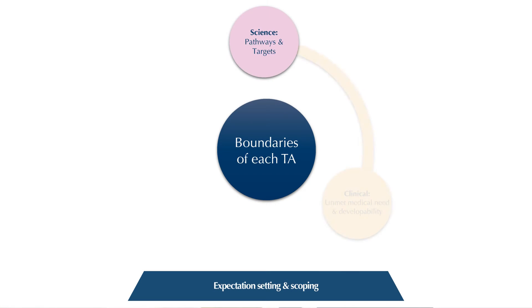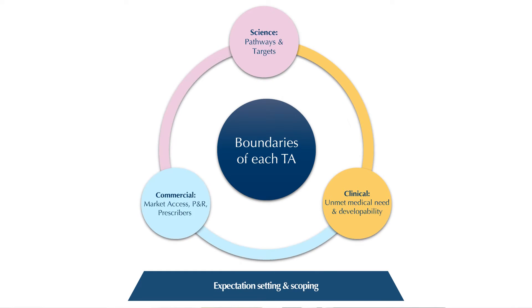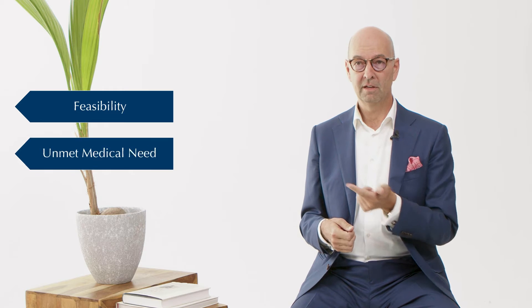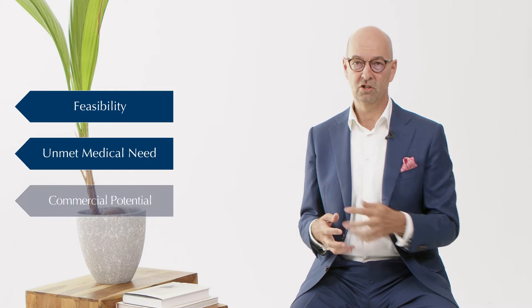First, expectation setting and scoping is about defining what the boundaries of the TA should be. As you know, TAs tend to overlap. Next, which dimensions will have what relative weight when prioritizing indications later in the process. These dimensions typically fall into three categories: feasibility, unmet medical need, and commercial potential.